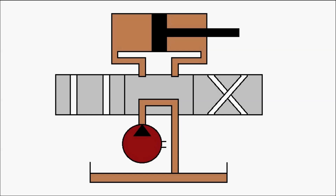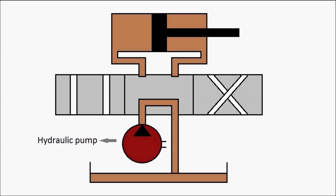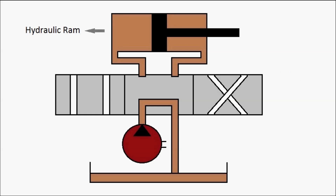First, let's identify the components. That's the reservoir, then we have the hydraulic pump — the symbol of the hydraulic pump is being shown there. Then that's our direction control valve; this is a three-position four-port direction control valve. And that's our hydraulic ram, or the hydraulic cylinder.